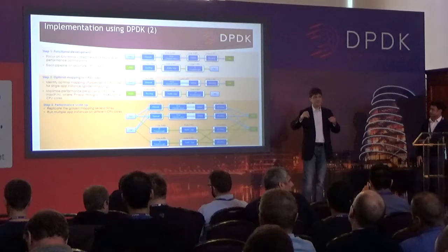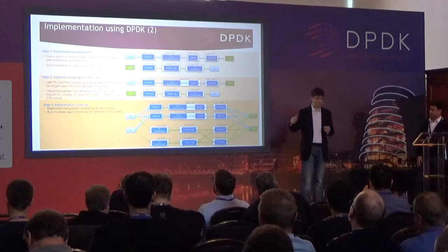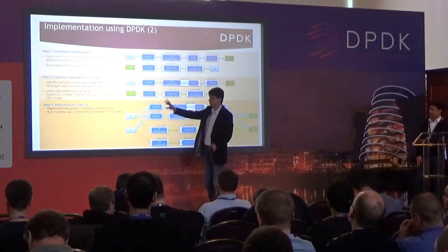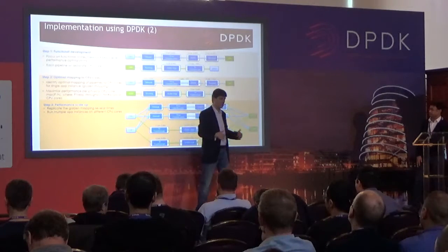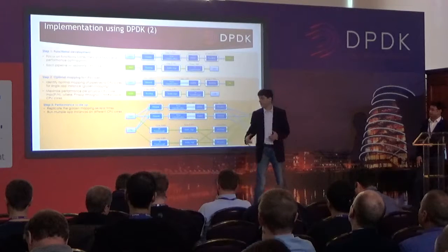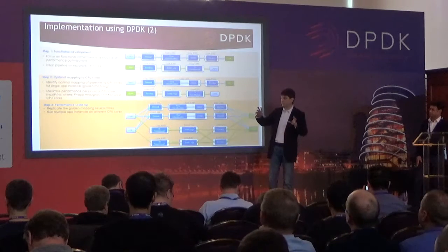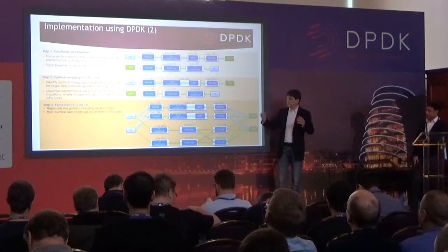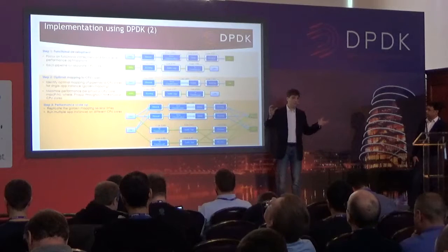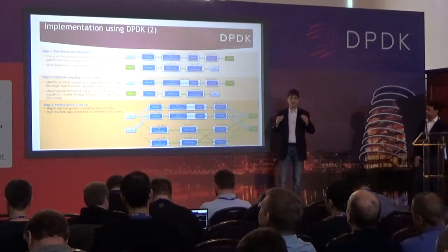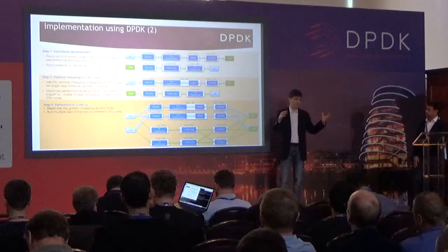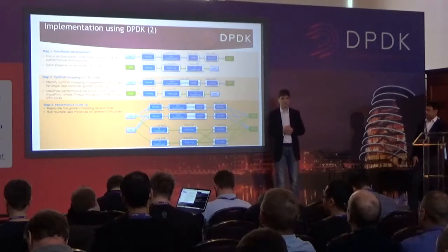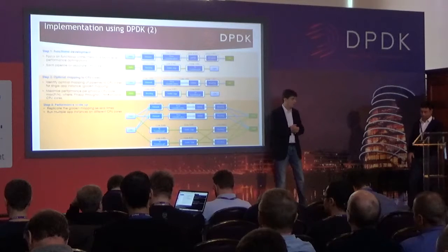Stop adding cores when adding another core no longer gives more performance. The last step is to replicate the golden configuration several times using different sets of CPU cores — run multiple application instances on different CPU cores. This is how you scale up performance. Stop when you run out of CPU cores or hit a global limit like cache bandwidth, memory bandwidth, or the size of your last-level cache.